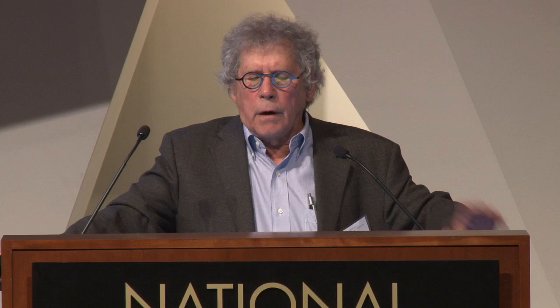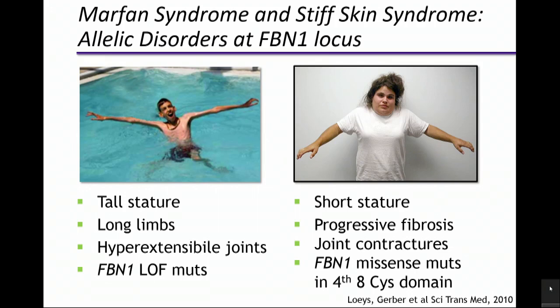One thing I want to say about causation is the importance in medical genetics of allelic heterogeneity. The first blush in the mouse is to knock the gene out, but we'll miss a lot of biology. Consider these two examples: the boy on the left has Marfan syndrome — very tall stature, long limbs, hyperextensible joints — caused by FBN1 loss-of-function mutations that are dominant, so he's heterozygous. The woman on the right has short stature, progressive fibrosis, and joint contractures rather than hyperextensible joints — and she has a very specific missense mutation in the exact same gene. Unless we model these allelic variants, we're going to miss a lot of interesting biology and causation.